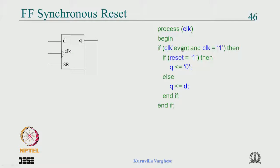So the synchronous reset code: process(clock) begin if clock'event and clock is equal to 1 then — under this, because it is synchronous — if reset is 1 then Q gets 0, else Q gets D end if end if end process. The outer end if represents the memory; the inner end if is the nested if for the synchronous reset.